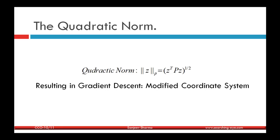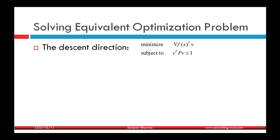Now let's move to the steepest descent method for the quadratic norm. The quadratic norm of z with subscript P is defined as (z^T P z)^(1/2), where P is a positive definite matrix. This results in a gradient descent method after a change of coordinates, which we will now derive.